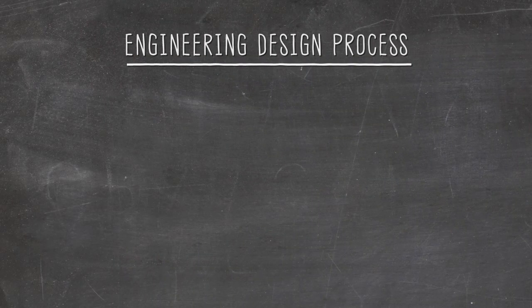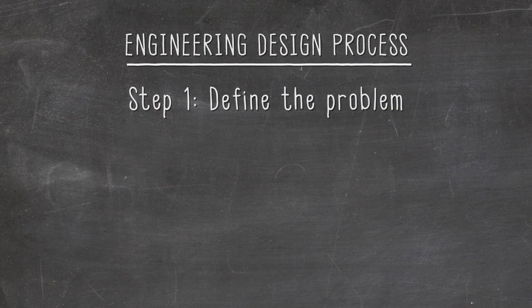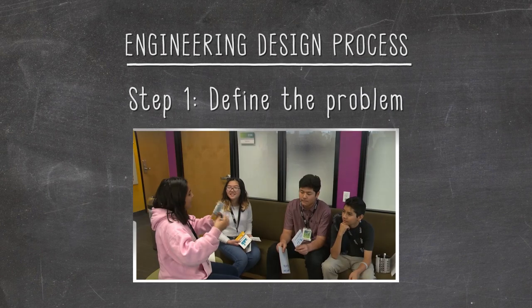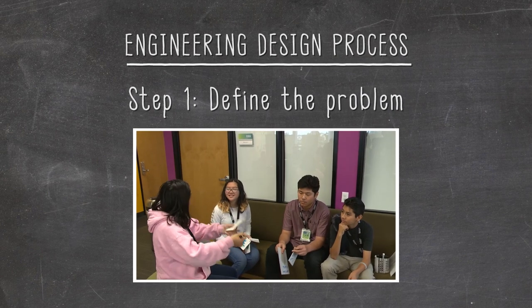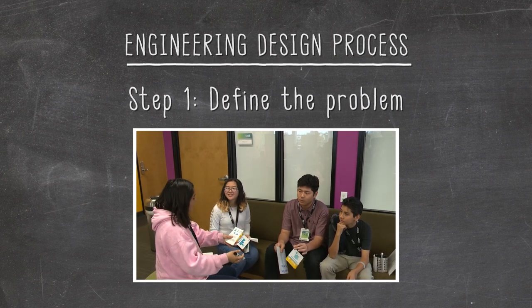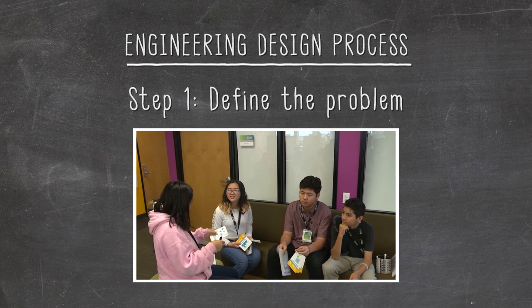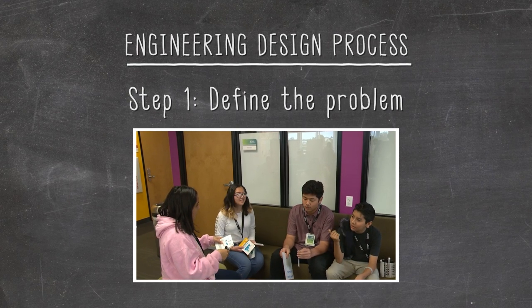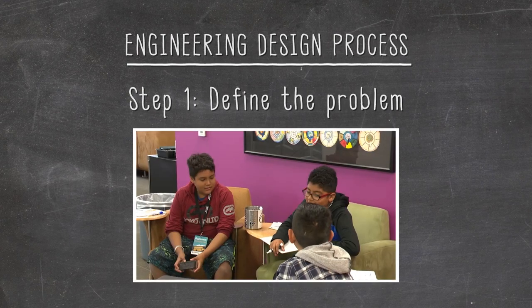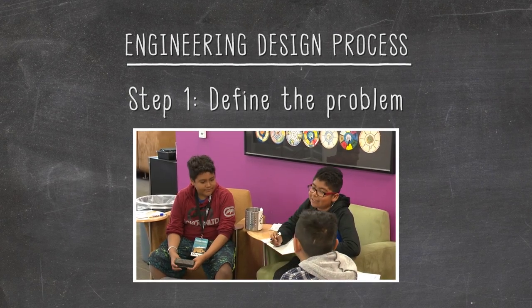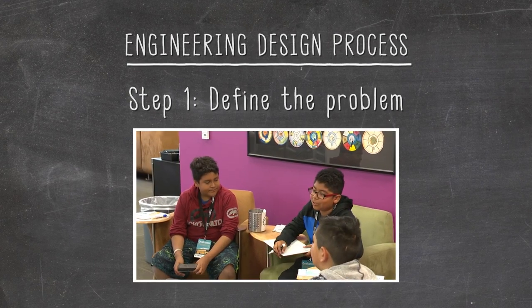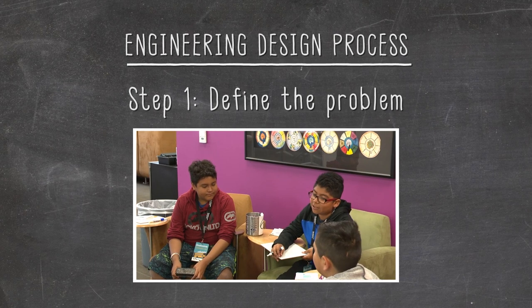Step one of the engineering design process is to define a problem. Every new invention starts with some sort of problem that needs to be solved. Talk with your group about what problem you might want to solve.